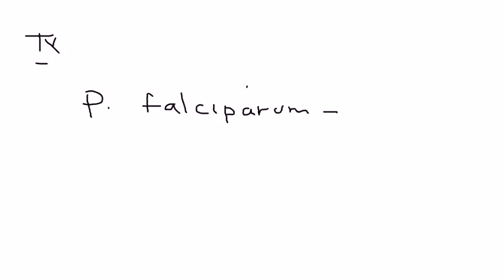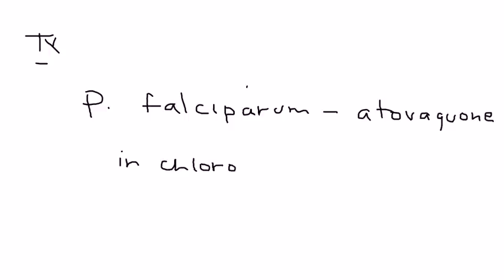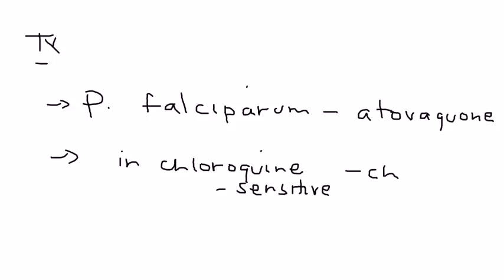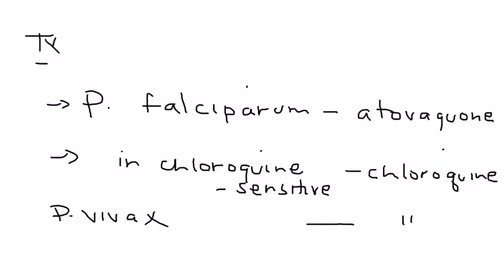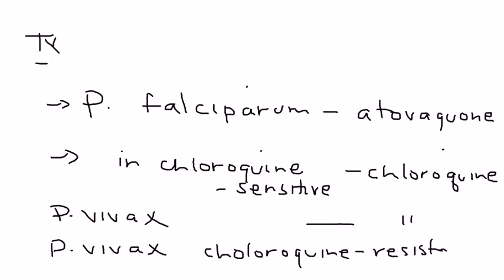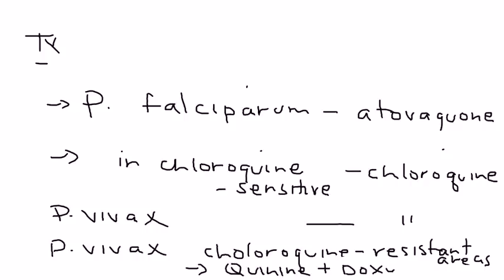In terms of treatment, there are many medications for malaria. For plasmodium falciparum, atovaquone is one of the more common medications, but if you are in a chloroquine-sensitive area, you would give chloroquine. With plasmodium vivax you also give chloroquine, but in a chloroquine-resistant area, different medications are required, including quinine plus the antibiotic doxycycline.